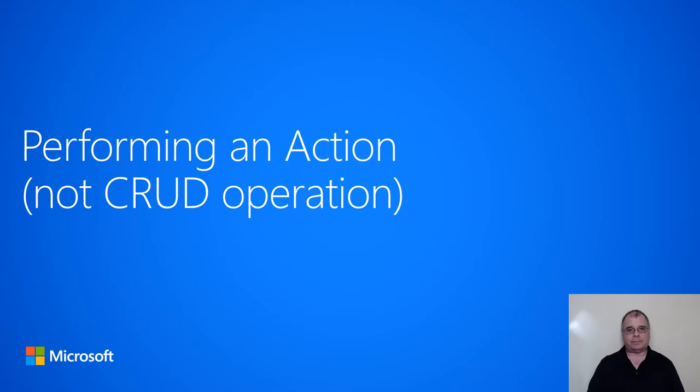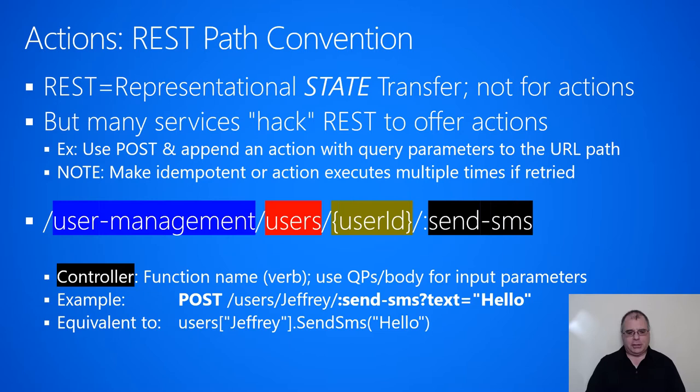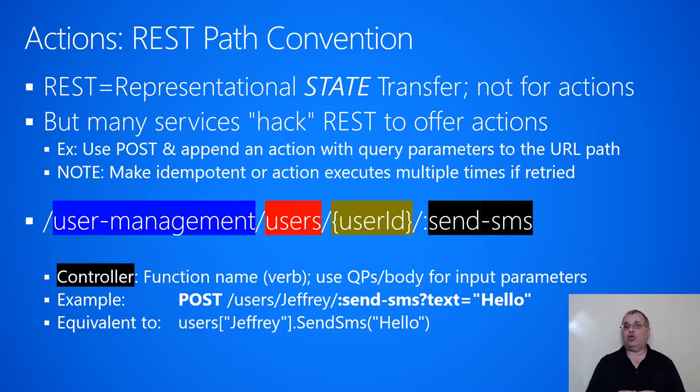In this section, we're going to talk about how to perform an action on a resource, as opposed to how to perform a CRUD operation on a resource. If you look at the REST specification, it is for representational state transfer. That's what REST stands for, which means that REST is really all about moving state from the client to the service and from the service to the client — we're transferring that state around. So that lends itself to CRUD operations like create the state, read the state, update the state, delete the state.